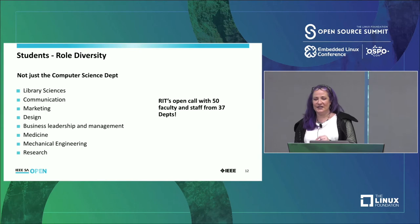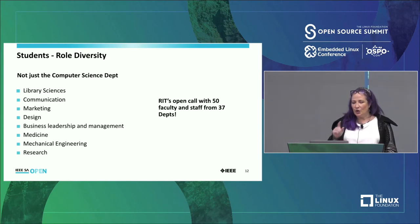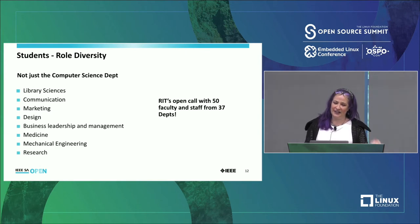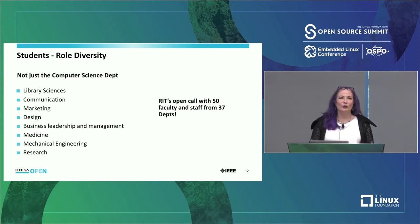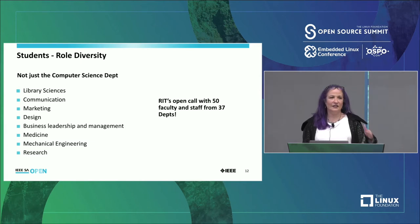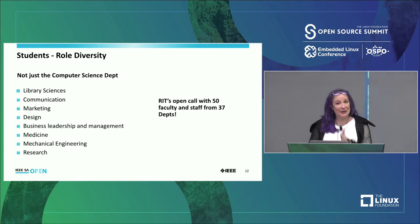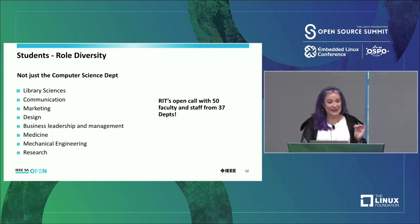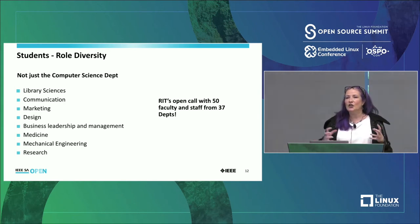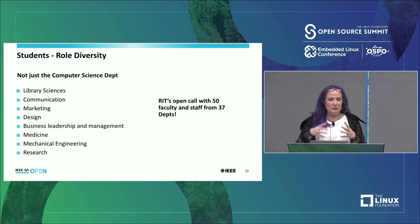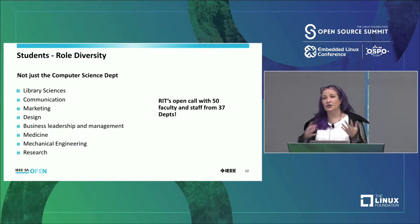With role diversity, it goes way beyond the computer science department. When Steven had that open call, he said 50 different faculty and students showed up from 37 different departments. A lot of groups now realize they need to be participating. Library sciences is a more obvious one, but some are less obvious: communication, marketing, design, business leadership and management. If you're at a corporate company and you don't understand how to manage open source, you're going to have problems. And then all of the different work happening around open research — medicine, mechanical engineering — all of those groups are now getting more and more involved in what we traditionally call open source.